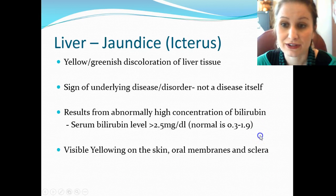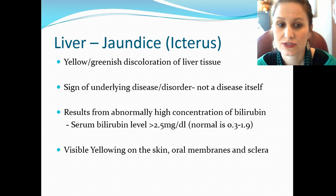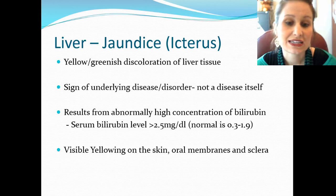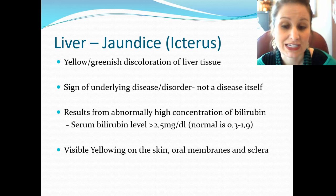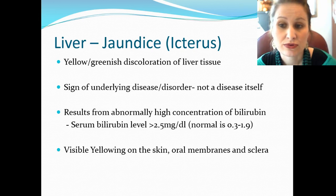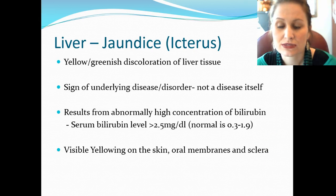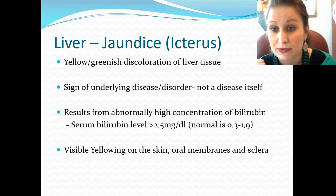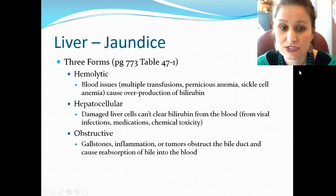The liver also forms and excretes bile and bilirubin through that large common bile duct. The liver can become jaundiced or icteric — a yellow-greenish discoloration that is a sign of underlying disease, not a disease itself. It results from abnormally high concentration of bilirubin. To be considered jaundiced, serum bilirubin typically must be greater than 2.5; normal bilirubin is 0.3 to 1.9. You'll see yellowing of the skin, oral mucous membranes, and sclera. In darker-skinned individuals, look in the eyes and mouth.